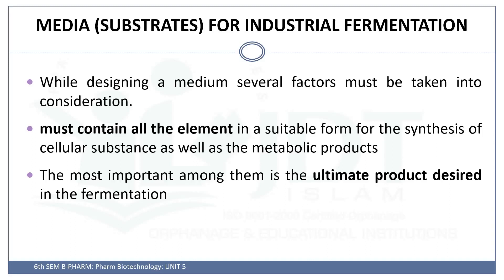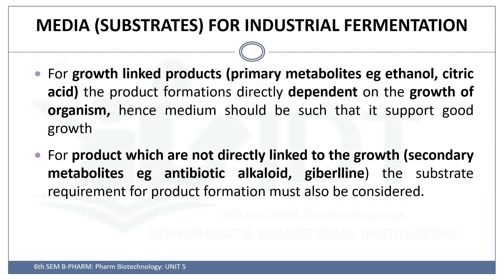The substrate may vary with the ultimate product. It should contain all the elements suitable for the synthesis of cellular substances as well as the metabolic products. We will discuss what type of products we are talking about — whether it is a primary metabolite or a secondary metabolite.